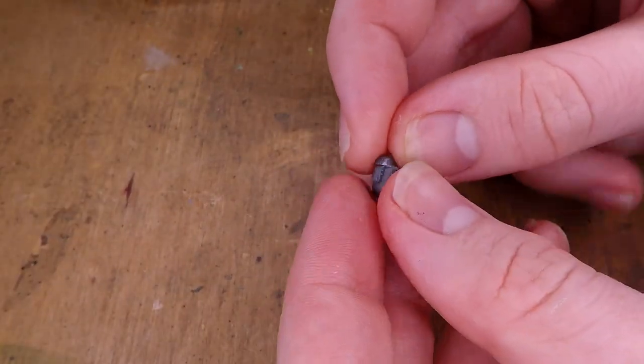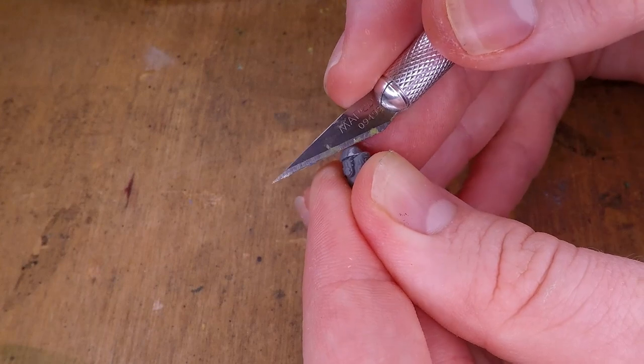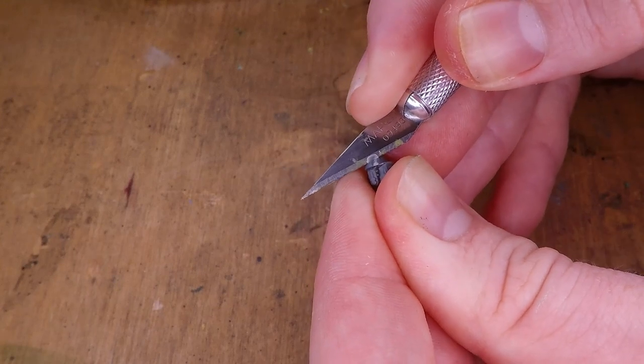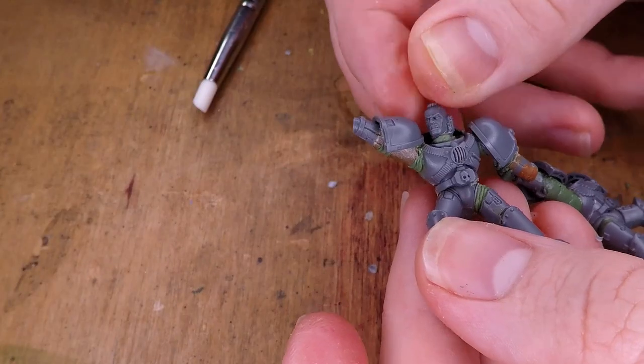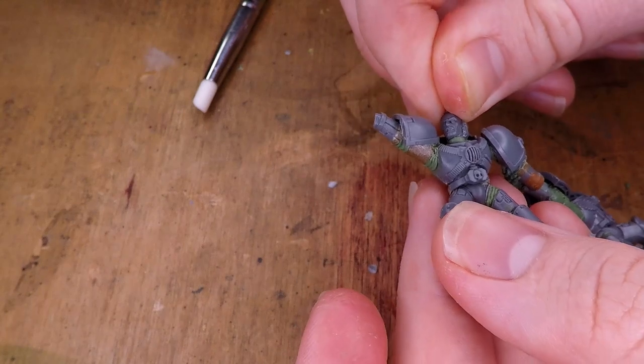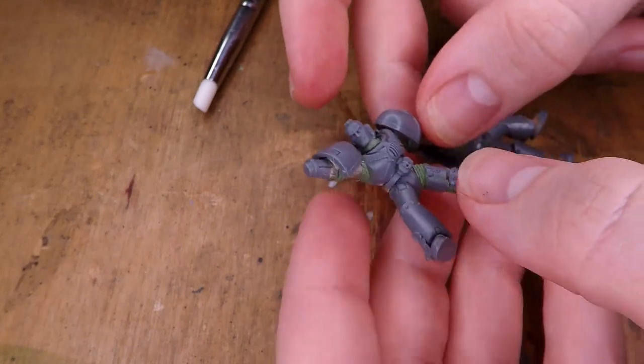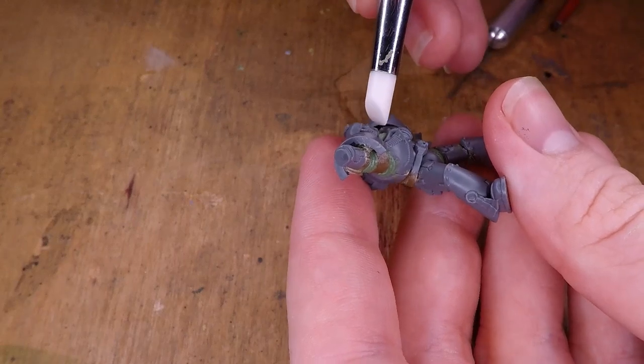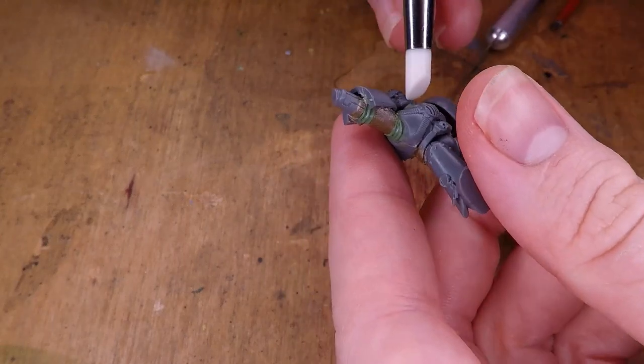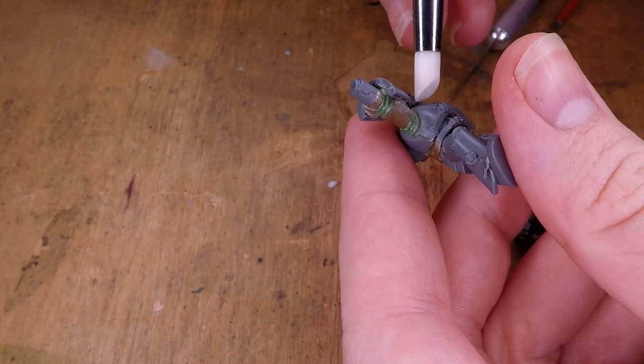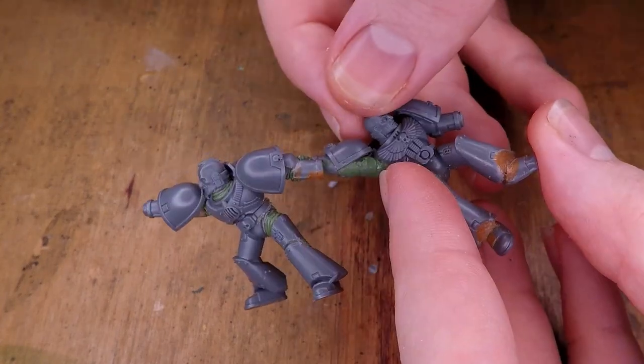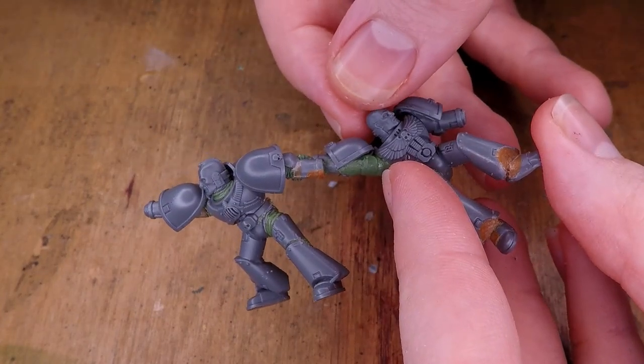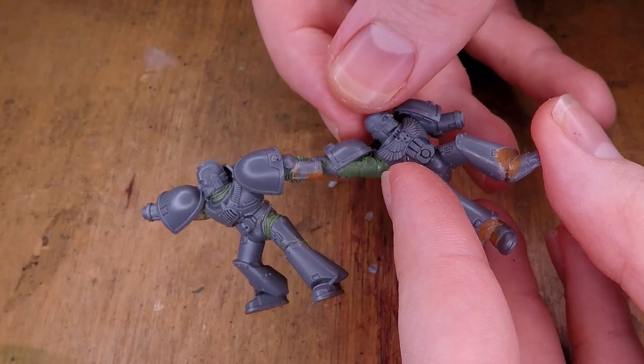While I leave that to set, I work on the heads for these two miniatures, shaving off the one a little bit so that I can attach it with green stuff rather than just super glue. The reason being, since he's looking up so much, I notice that you can kind of see how he was being attached to the torso, which I didn't like. But for the second miniature, I just add it with super glue because that wasn't as much of a problem.